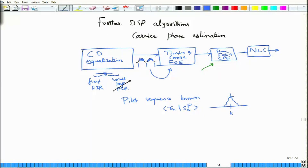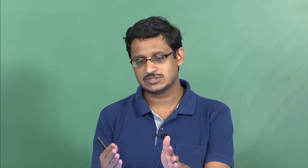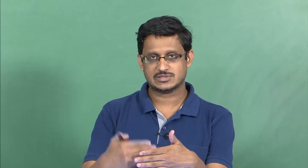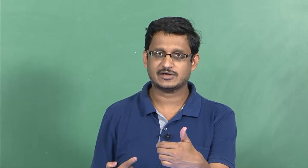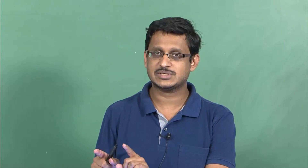Once you have determined the timing, the receiver clock will then be synchronized to the transmitter clock. This is a very important step that you have to do right after CD equalization, because CD equalization allows you to put the symbols back into their slots reasonably. If there is some residual dispersion, synchronizing the receiver and transmitter clocks becomes a little complicated. But if CD is completely equalized, the symbols are back into their time slots, and you can derive the sampling clock from them.